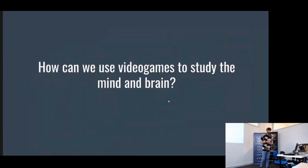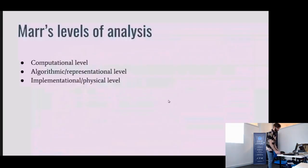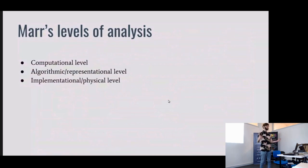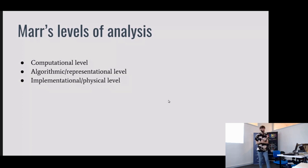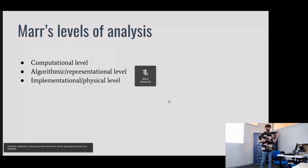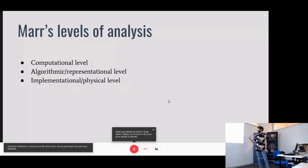To talk about how we can use video games to study the mind and brain, I should first talk about how we can study the mind and brain at all. One very important concept — easy even for those in computer science — is David Marr's levels of analysis. Marr was a famous psychologist and neuroscientist who described systems that process stimuli at three main levels: the computational, the algorithmic, and the implementation.